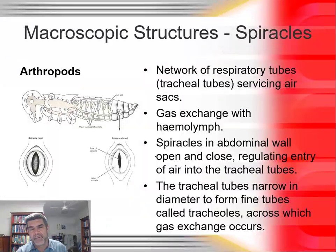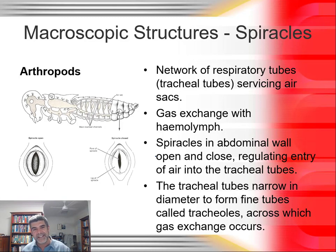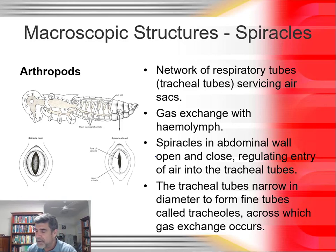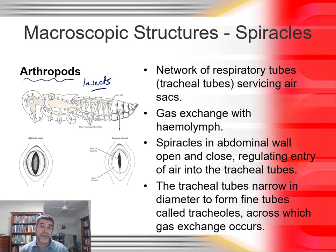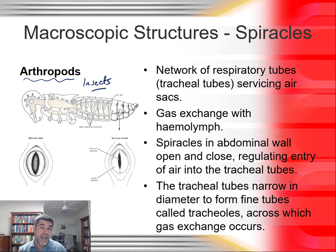At the macroscopic level, we can't entirely separate it from the microscopic because some structures are still very small. The first example to look at is arthropods — specifically insects. Insects have a network of respiratory tubes called tracheal tubes that serve as a series of little air sacs. Consider these as multiple mini regions where gas exchange is occurring, rather than one central region like the alveoli in mammals.